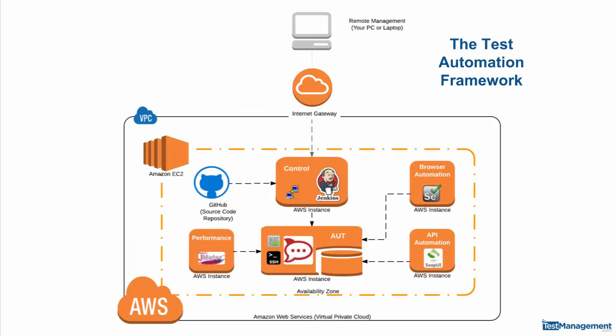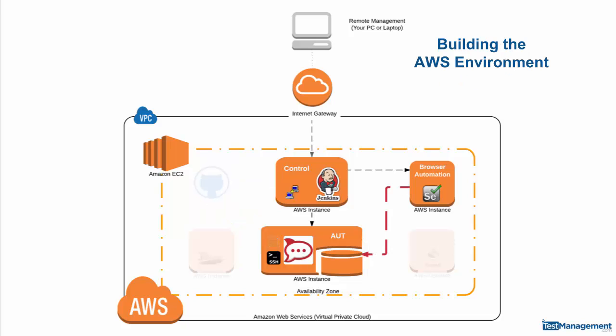We're well on our way to completing our automation framework that includes Amazon Web Services, Jenkins, Selenium, SOAP UI, JMeter, and Git. We're on to module three now, where we write some Selenium scripts in Python and add these into our Jenkins automation framework.